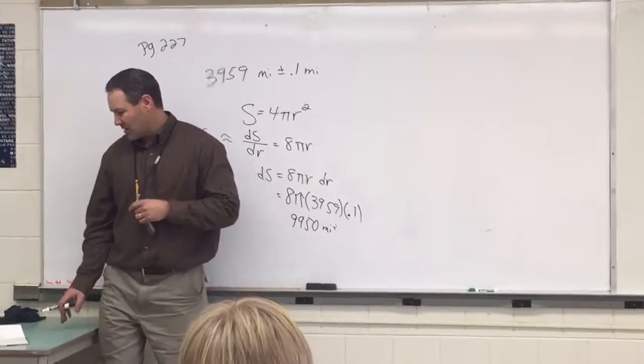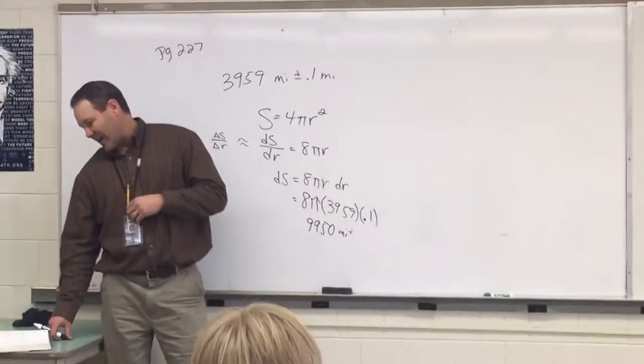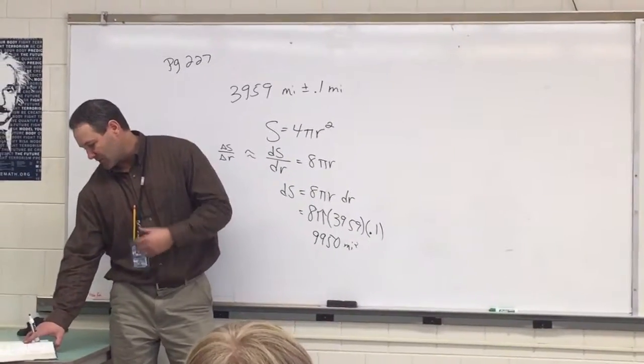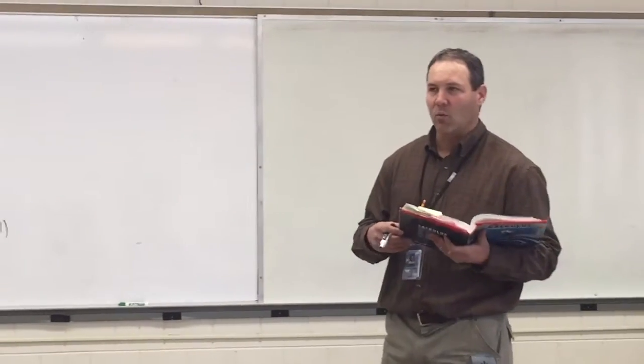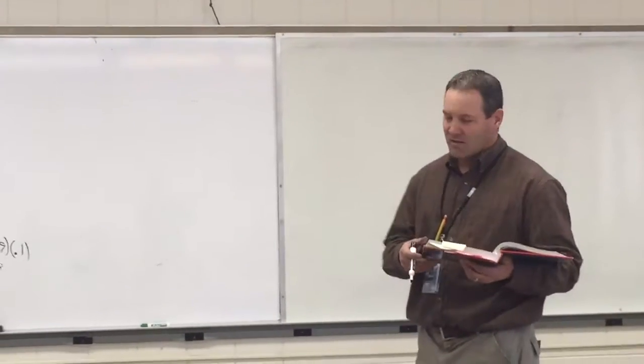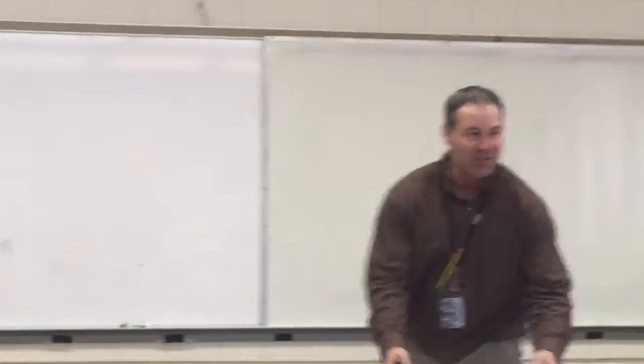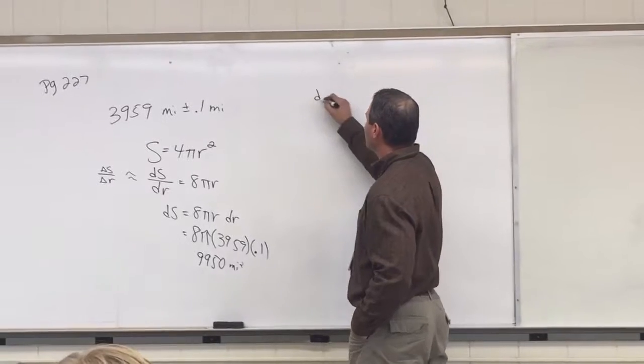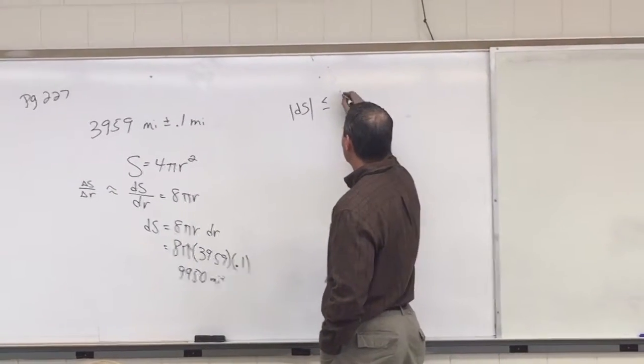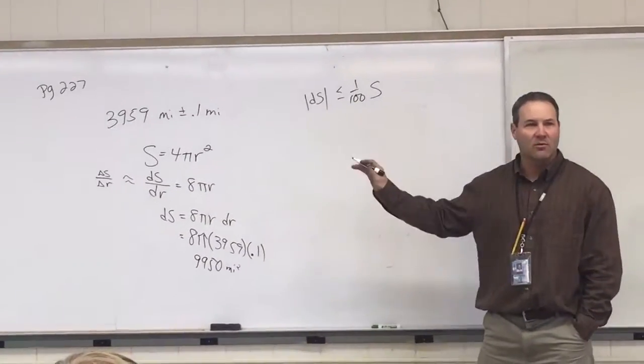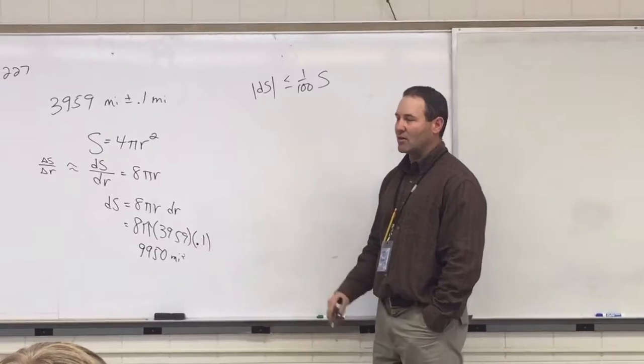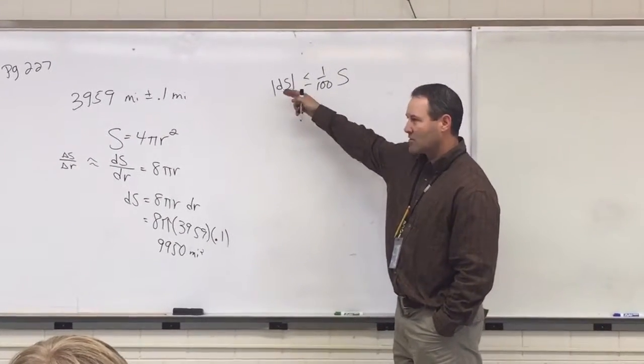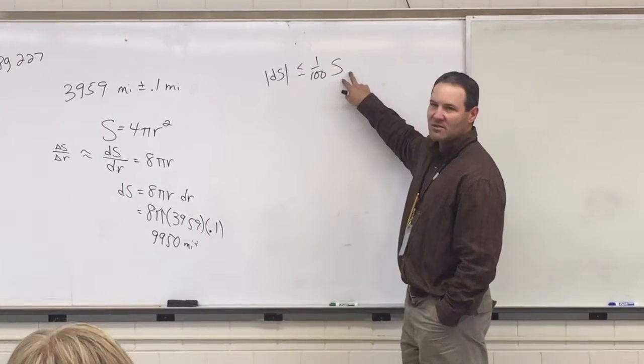It gets a little more difficult in example 11. Determining the tolerance. About how accurately should we measure the radius of a sphere to calculate the surface area within 1% of its true value? All right, so the surface area has to be within 1% of its true value. So I would say our change in surface area has to be within 1% of the actual surface area. That's the most important part of the whole problem.